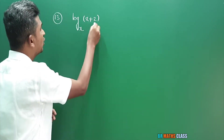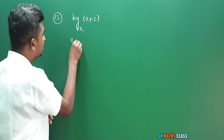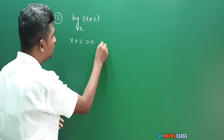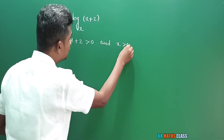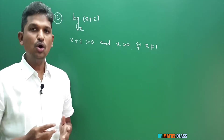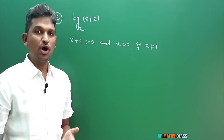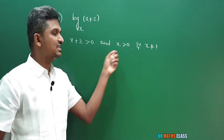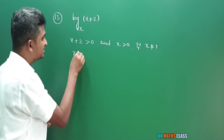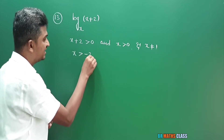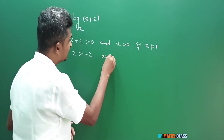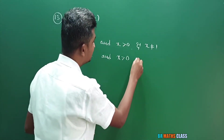Observe question number 13. We want to find the domain of logarithm of (x+2) base x. When this function is defined, this part (x+2) must be greater than 0, and the base x must also be greater than 0, and the base cannot be equal to 1. So x+2 must be greater than 0, x must be greater than 0, and x not equal to 1. From x+2 > 0, we get x > -2.